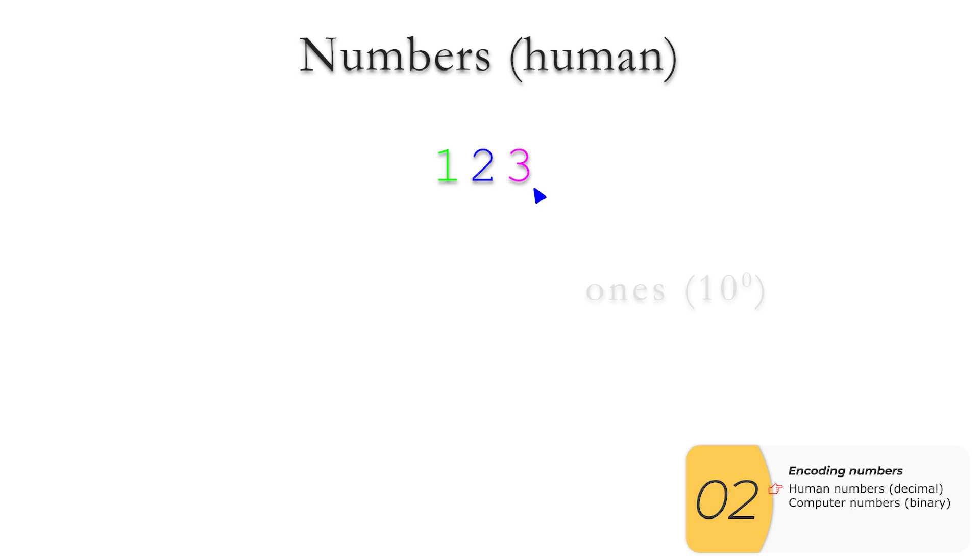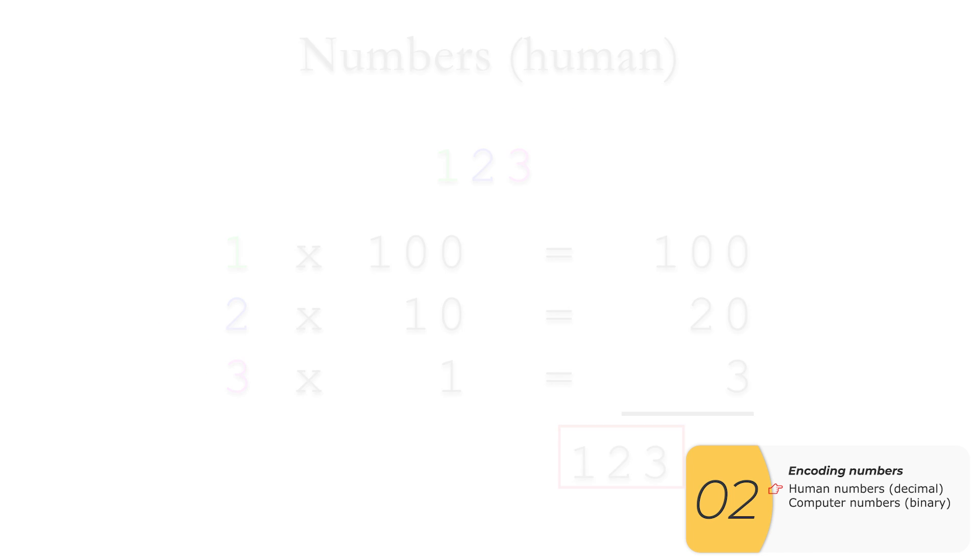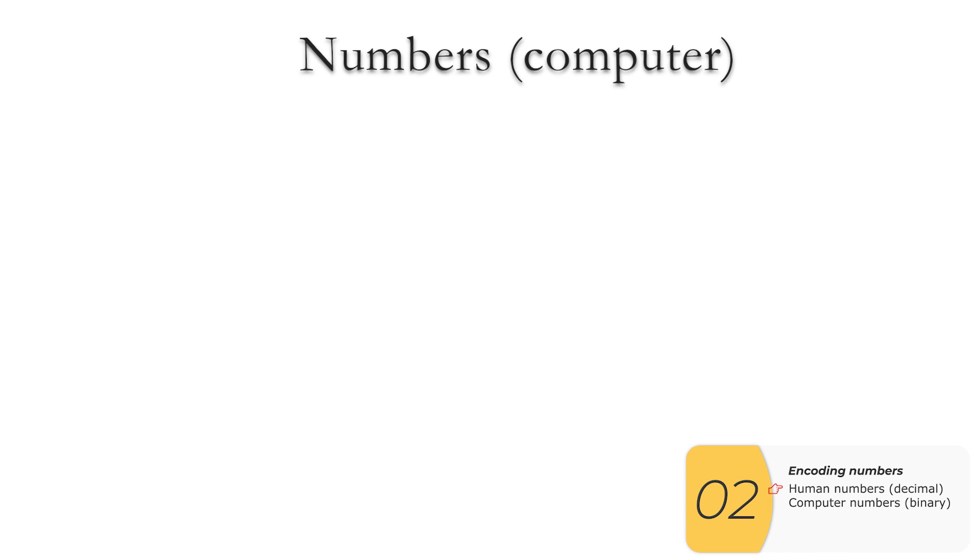So take the number 123. We have a 3 in the 1s place. And this 1 actually comes from 10 to the 0th power. Remember that, because we're going to use it later. We have a 2 in the 10s place. This 10 comes from 10 to the 1. And we have a 1 in the 100s place. And this 100 comes from 10 to the 2. So remember that concept of powers, because again, we're going to use it later. All right, so 123 then becomes 1 times 100, 2 times 10, and 3 times 1. You add it all together, and you get 123. So that right there is numbers from the human point of view.